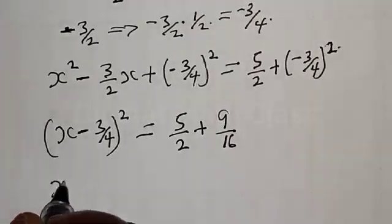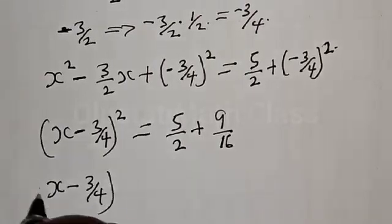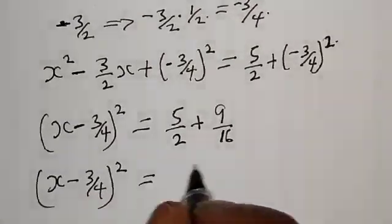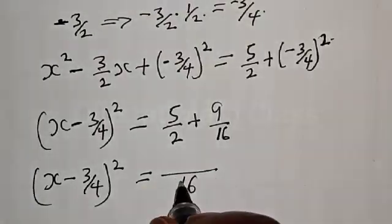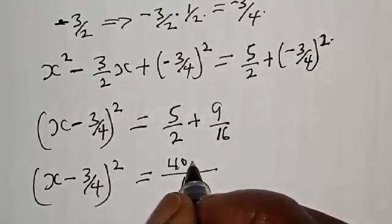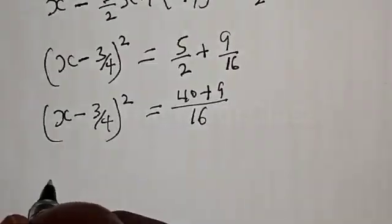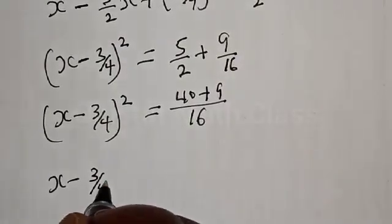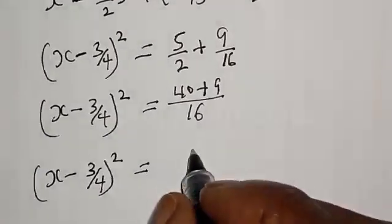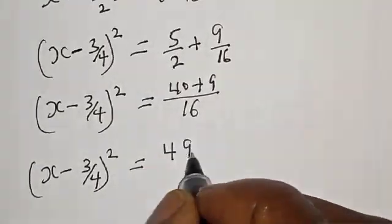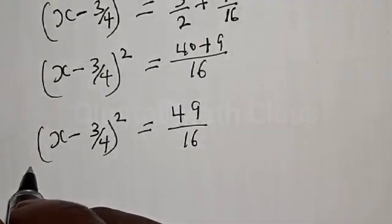So we have (s - 3/4)² = 5/2 + 9/16. Converting 5/2 to sixteenths gives 40/16, so 40/16 + 9/16 = 49/16.